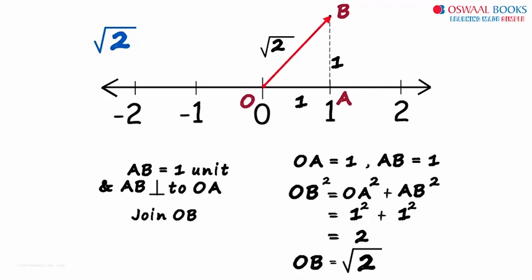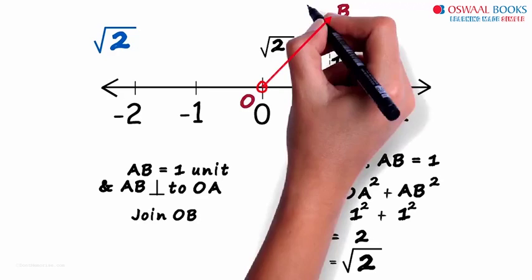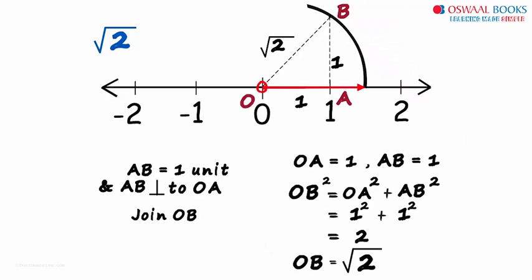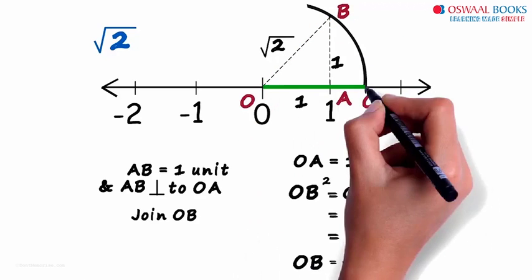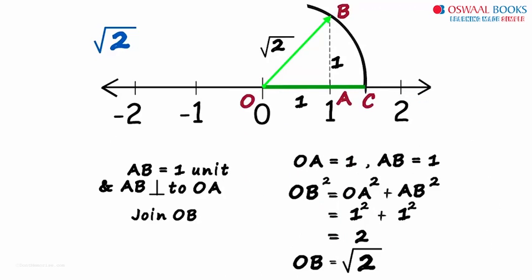We just need this length here on the number line. To do that, we keep the vertex of the compass here and with length OB cut an arc on the number line. Let's call this point C. This green length OC will equal this length since they are the radii of the same circle. Hence length OC is also equal to root 2.